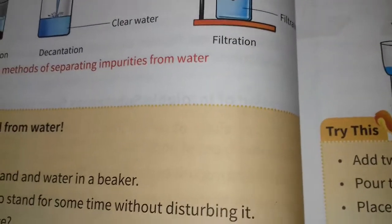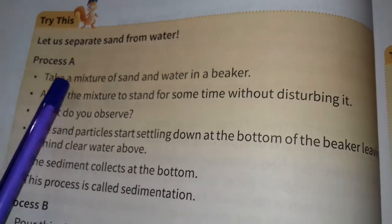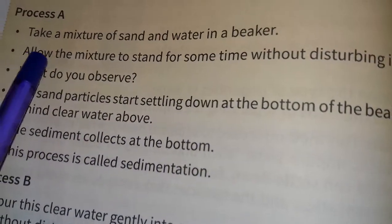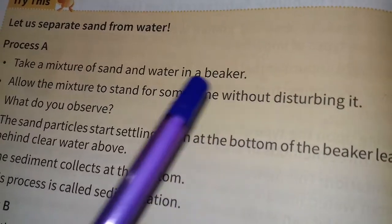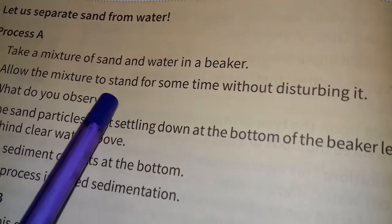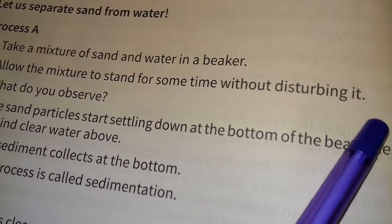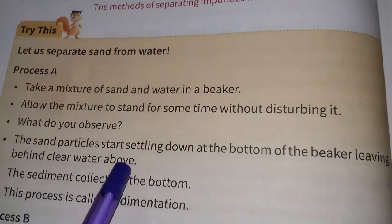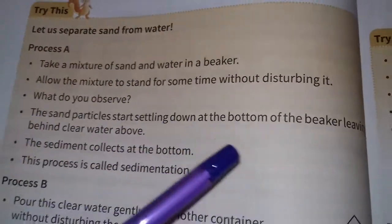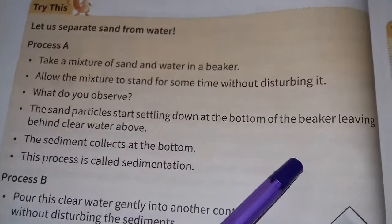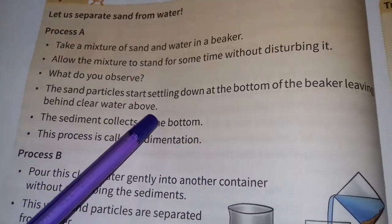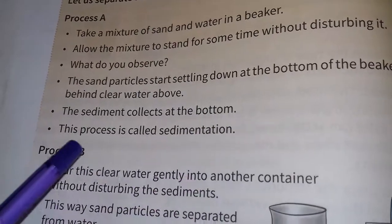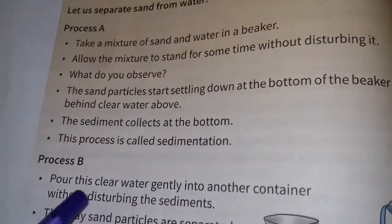Now we can try this. Process A: let us separate sand from water. Take a mixture of sand and water in a beaker. Allow the mixture to stand for some time without disturbing it. What do you observe? The sand particles start settling down at the bottom of the beaker, leaving behind clear water above. The sediment collects at the bottom — this process is called sedimentation.